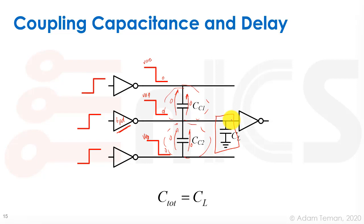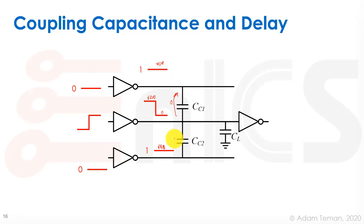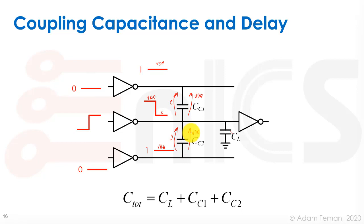The effective capacitance when transitions are similar between coupled drivers and the actual driver cancels out the coupling capacitors, and the effective capacitance is only the regular load lumped to ground. However, in the common case where the neighbors are not toggling and stay steady, the coupling capacitor makes a full transition from 0 to VDD. So the total effective load is C_L + C_C1 + C_C2.